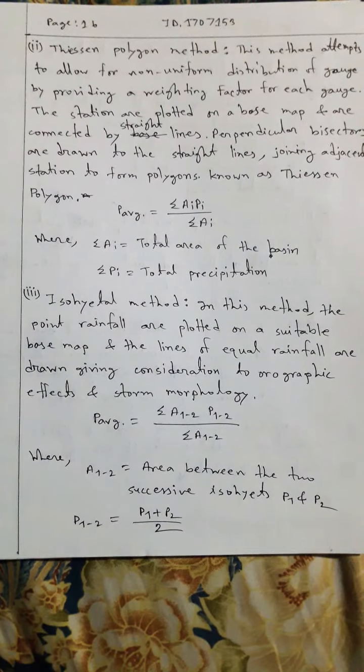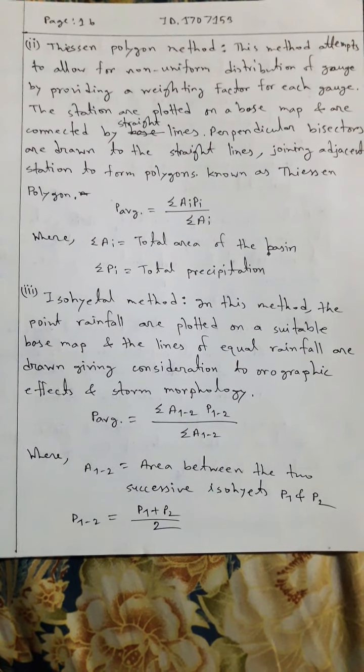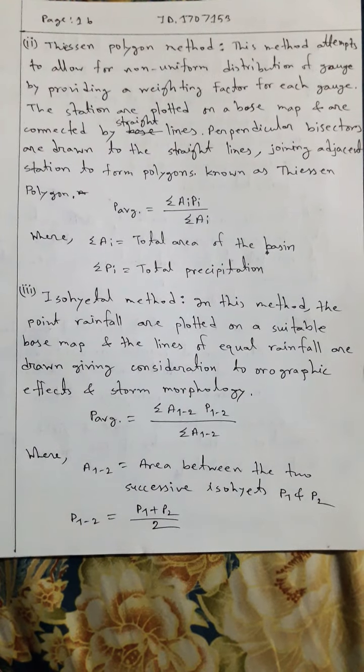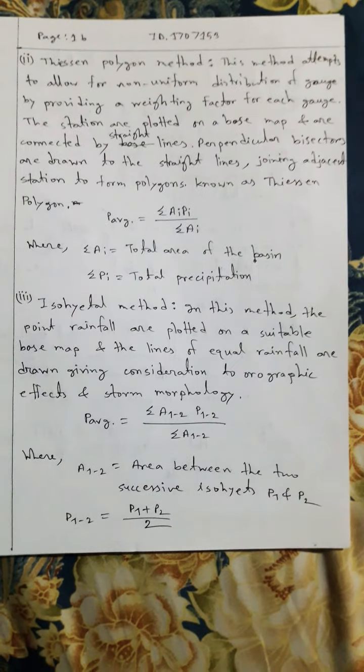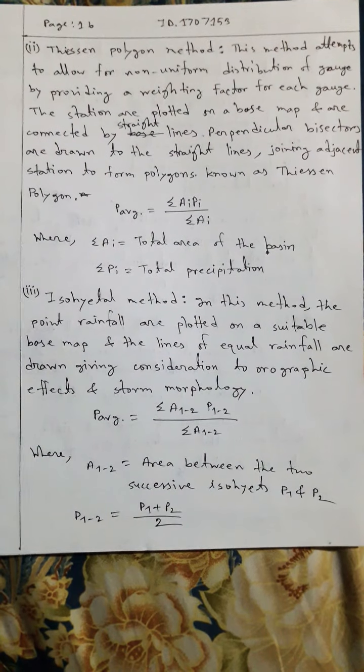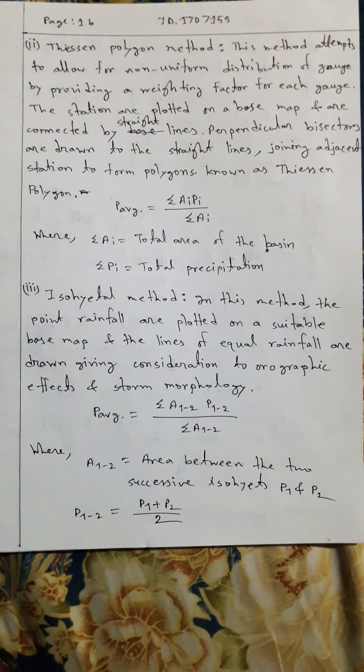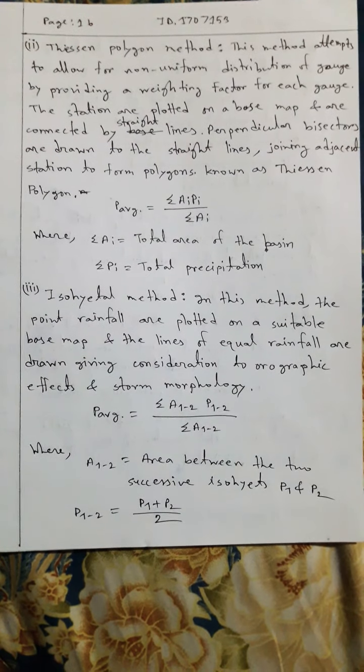The average equals summation of A1-2 times P1-2 divided by summation A1-2, where A1-2 equals area between the two successive isohyets P1 and P2. P1-2 equals P1 plus P2 divided by 2.